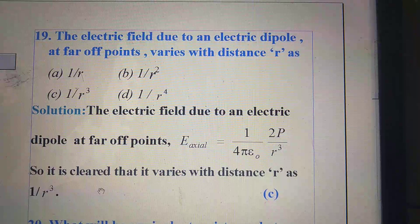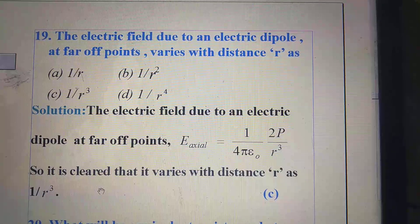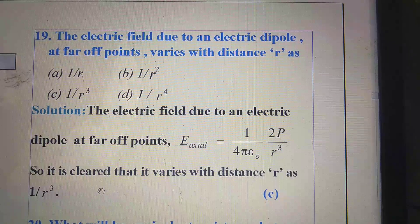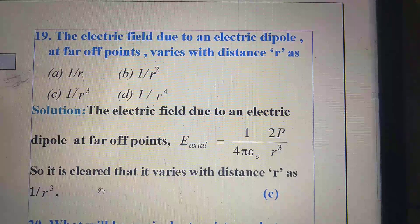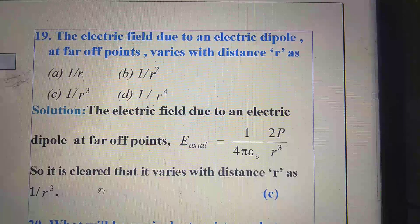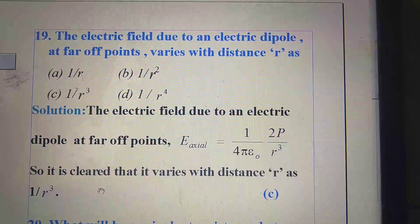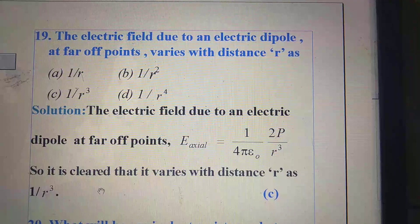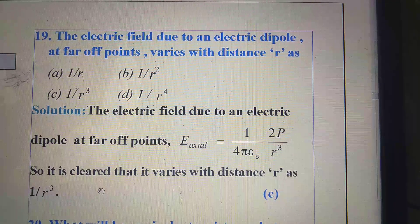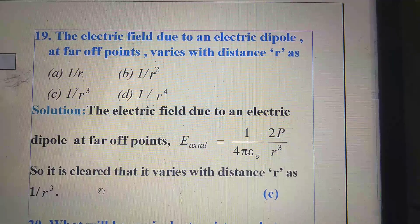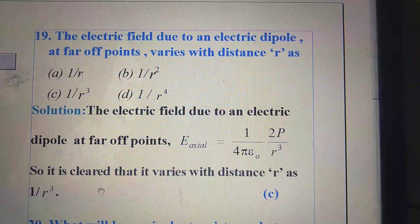The electric field due to an electric dipole at far off points varies with distance R as: option A, 1 by R, option B, 1 by R square, option C, 1 by R cube, option D, 1 by R to the power 4.